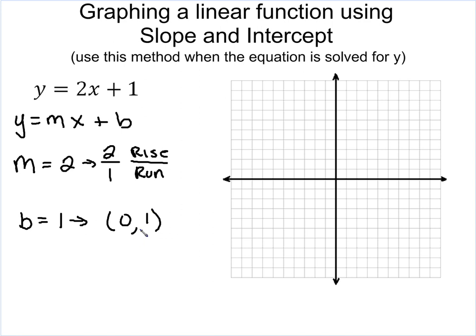Now, in this type of problem, how we're going to graph this, we always want to graph our point first. So we're going to graph 0, 1. I'm going to go up 0 and put a point right at 1. Since it's my y-intercept, it will always be on my y-axis.